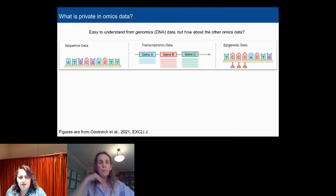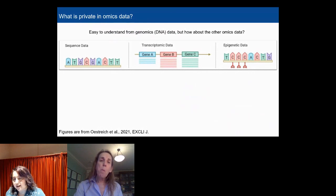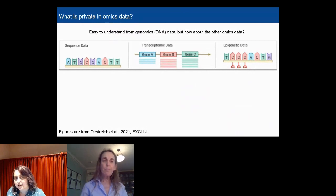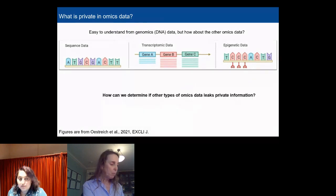When we share genomics data, such as whole genome sequencing data, it's kind of easy to understand what the privacy problems are. You can get the SNPs, SVs, all sorts of information about an individual's genome. It's not as clear when we have transcriptomic data where it tells you which genes are expressed, or epigenetic data, which factors bind to DNA. It's not that clear what kind of private information we can infer. The question becomes how we can determine if these other types of omics data leak private information.